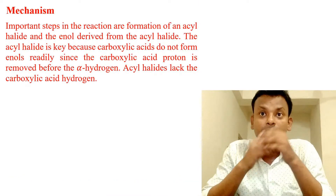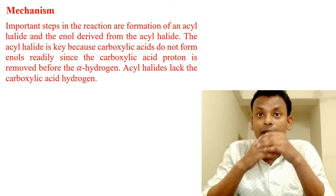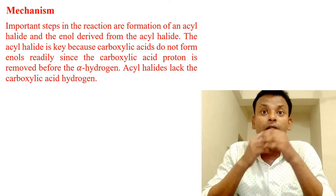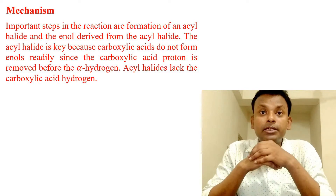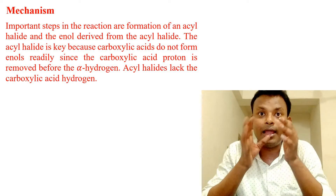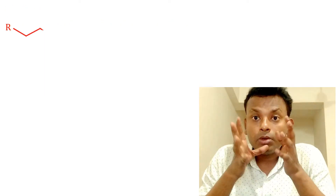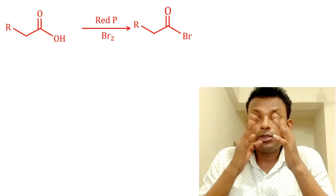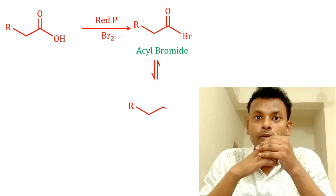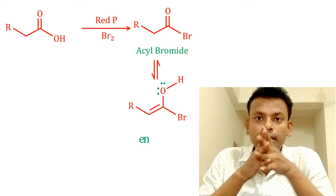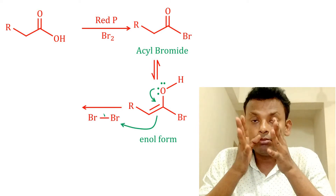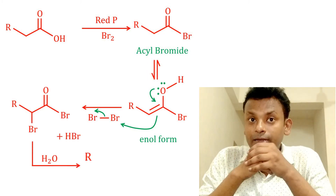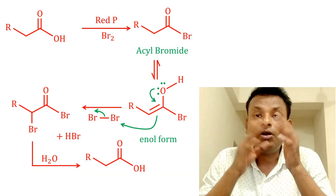Mechanism: The important steps in the reaction are the formation of an acyl halide and the enol derived from the acyl halide. The acyl halide is key because carboxylic acids do not form enol readily, since the carboxylic acid proton is removed before the alpha hydrogen. Acyl halide lacks the carboxylic acid hydrogen. Carboxylic acid reacts with bromine in the presence of red phosphorus to form acyl bromide. Through tautomeric change it forms the enol form, and again bromine reacts with this enol form. Then HBr is removed, and the last step — hydrolysis — gives the alpha-bromo carboxylic acid.